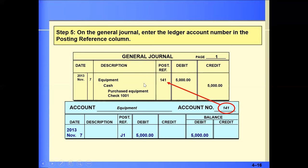Since this account had no beginning balance, adding a $5,000 debit gives a balance of $5,000. Then on the general journal, enter the ledger account number — 141 is the equipment account number — in the posting reference column. This is just the equipment part of the transaction. The next part would be the cash side: cash would be credited by $5,000, reducing its running balance. Each account has its own general ledger page in the company's accounting system.